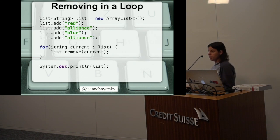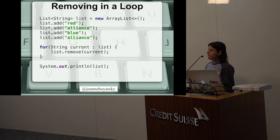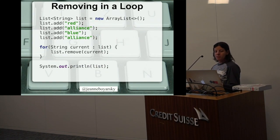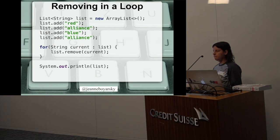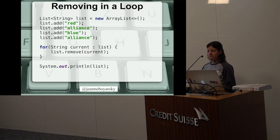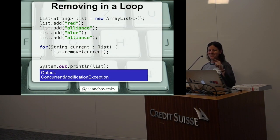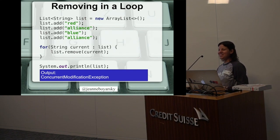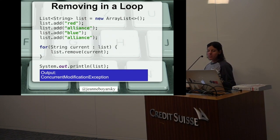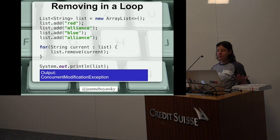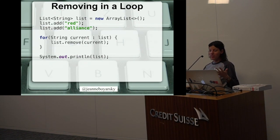The first one is removing in a loop. We've got some code here that removes stuff in a loop. Does anyone know what happens if we run this code? I heard someone say concurrent modification, and I heard someone say bad. Both of those things are accurate. When you run this code, it blows up, because you're not allowed to remove stuff in a loop. That is not surprising — many of you knew that.